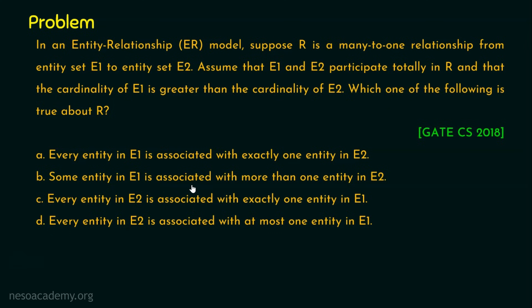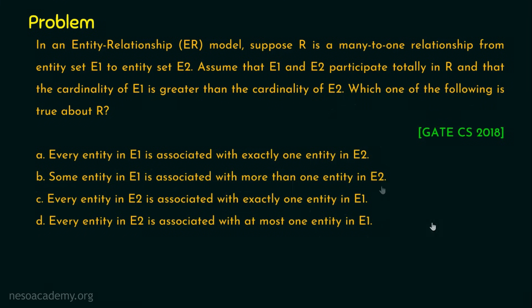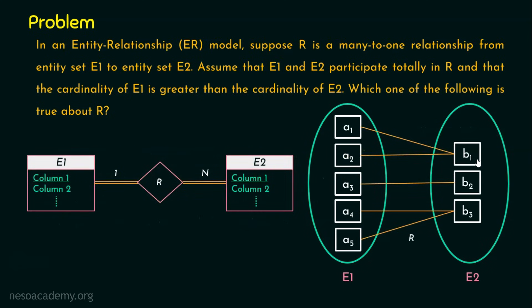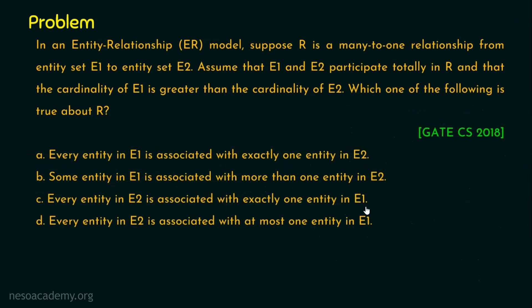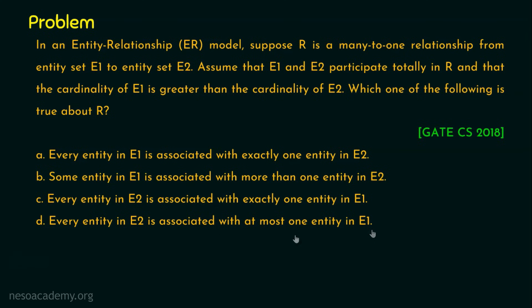Option B — some entity in E1 is associated with more than one entity in E2 — is definitely not true; it's exactly one entity, not more than one. So option B is incorrect. Option C — every entity in E2 is associated with exactly one entity in E1 — is incorrect because B is associated with more than one entity in E1. Option D — every entity in E2 is associated with at most one entity in E1 — is also incorrect, because E2's relationship with E1 has a maximum of N, not 1. So the right answer is option A: every entity in E1 is associated with exactly one entity in E2. Thank you for watching.